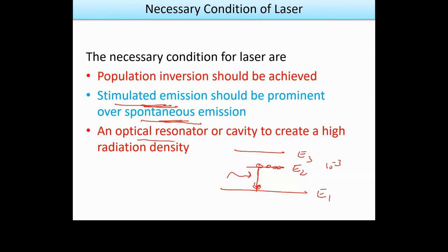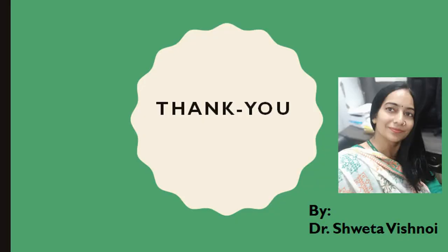The last condition is an optical resonator and cavity to create high radiation density. This is the final condition — the optical resonator and cavity are used to build up and amplify the intensity of the laser beam.